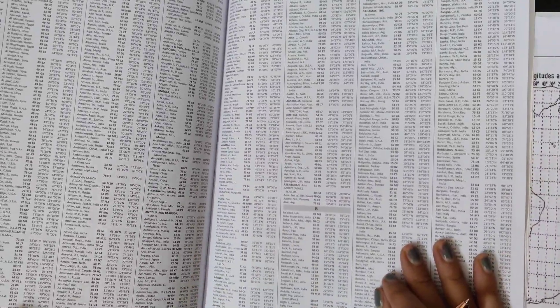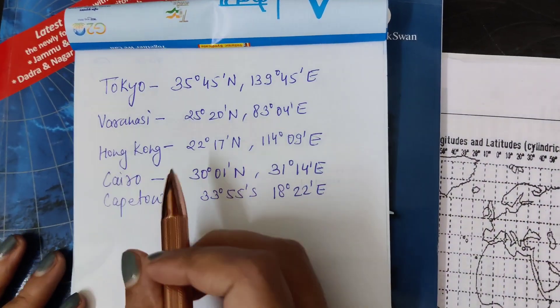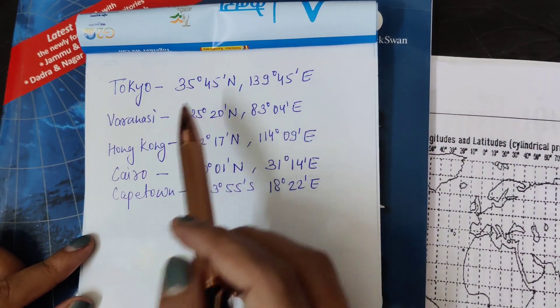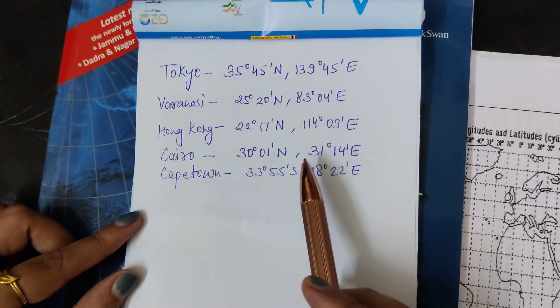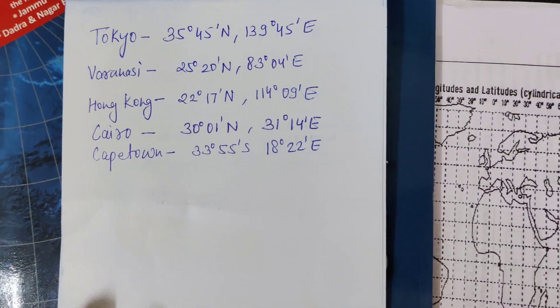I have written all the latitudinal and longitudinal values for these five countries we are going to work upon. I will be marking these places on the grid.